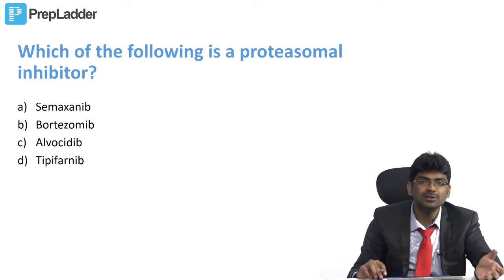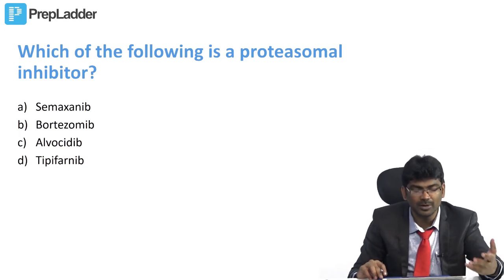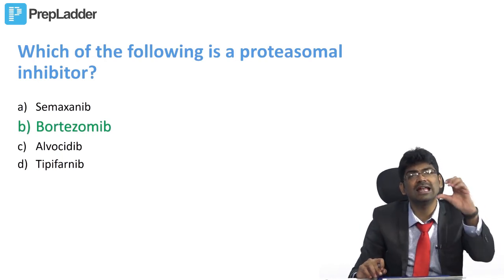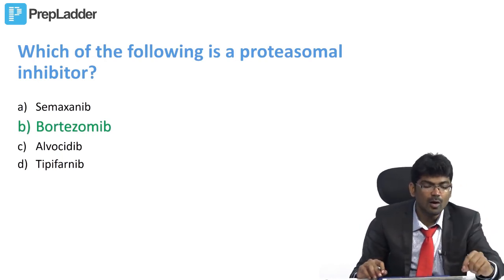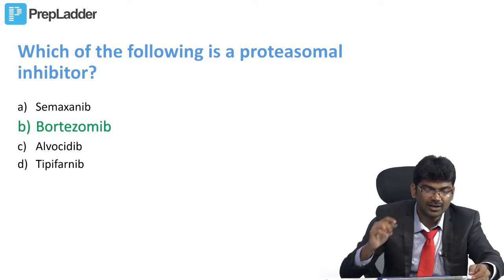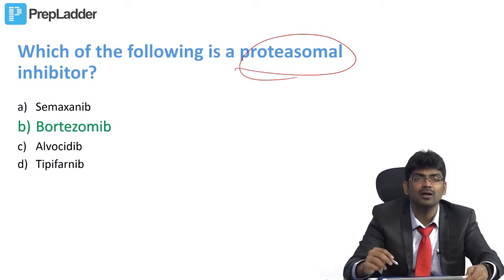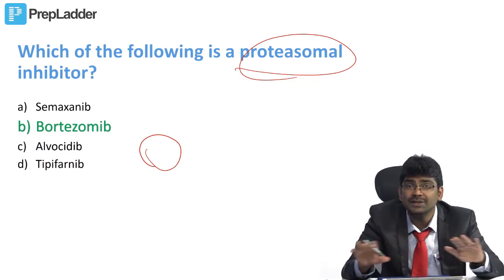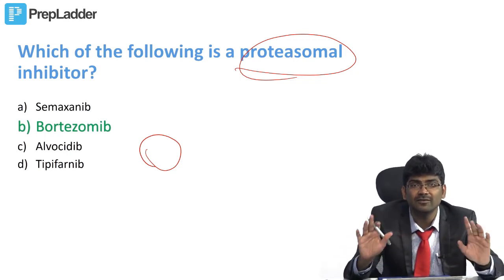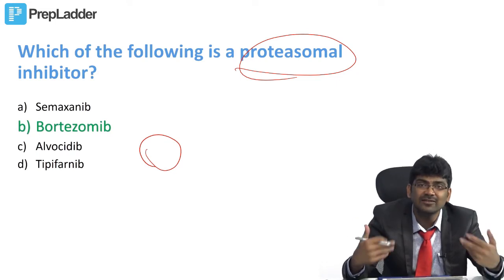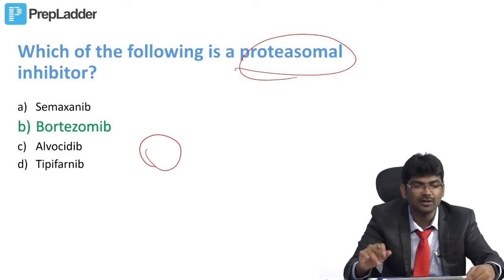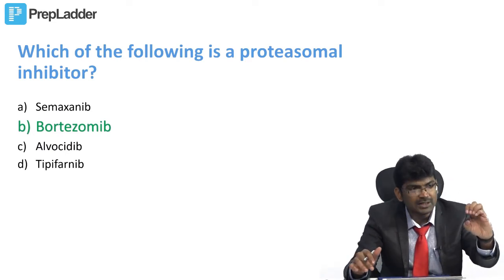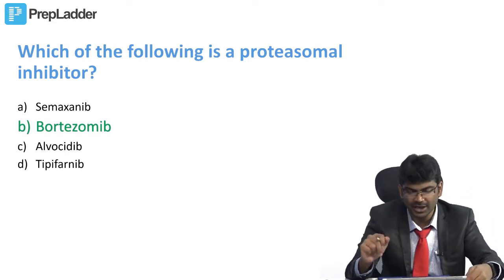Which of the following is a proteasomal inhibitor? In multiple myeloma, bortezomib is used to prevent light chain toxicity — it is an inhibitor of the proteasome. All ubiquitinated proteins are destroyed in proteasomes, not lysosomes.